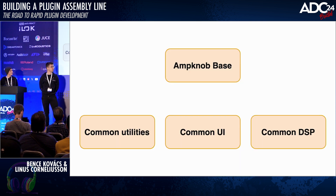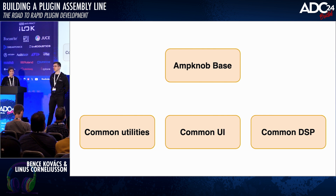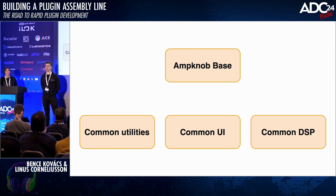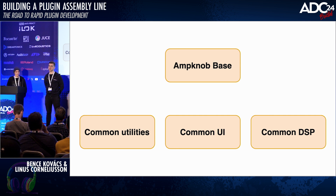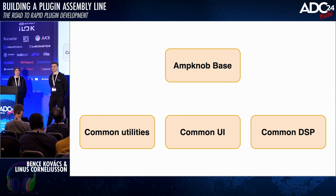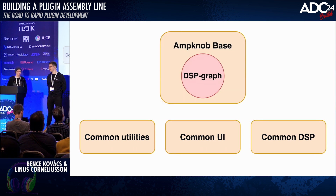Another challenge we faced when working on the three AMP knob plugins simultaneously was that since we were working on three plugins at the same time, it was great to have a shared codebase. But DSP-wise they were quite different and had different requirements — some had effects specific only to those plugins. So we wanted a DSP foundation flexible enough for different scenarios. We started using an audio processor graph for that.